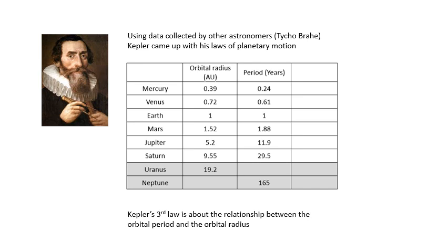There is an obvious pattern: the bigger the orbital radius, the bigger the period — the longer it takes to go around the Sun. If this is your first time watching, work out T² and R³ in the last column, then divide T² by R³, and you will notice something very interesting. That is essentially Kepler's third law.